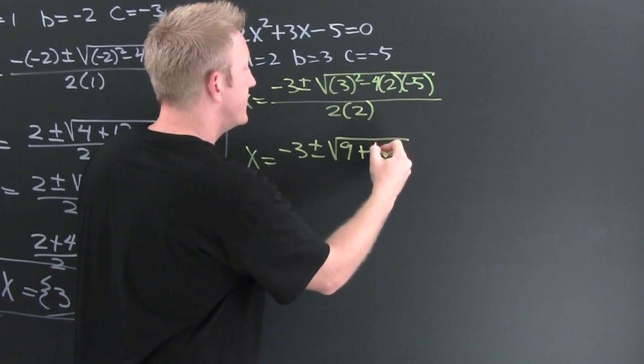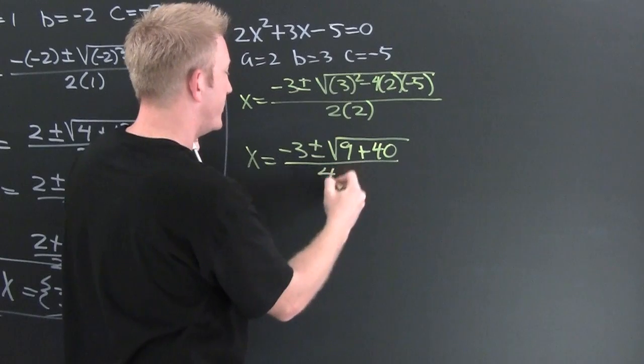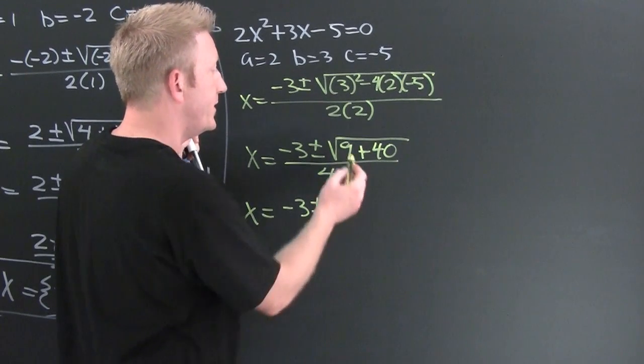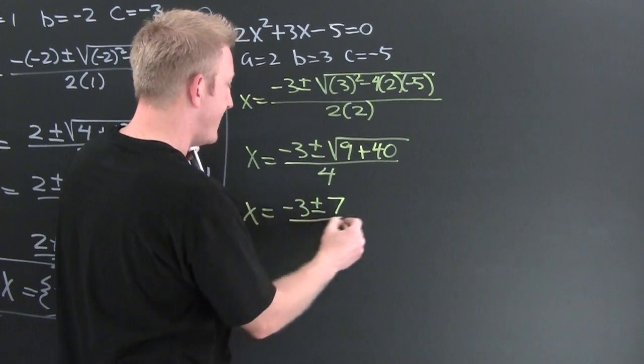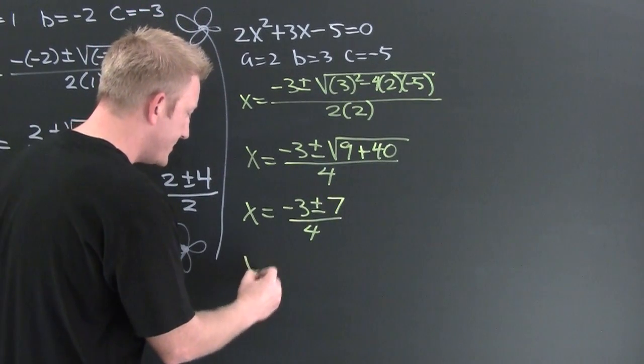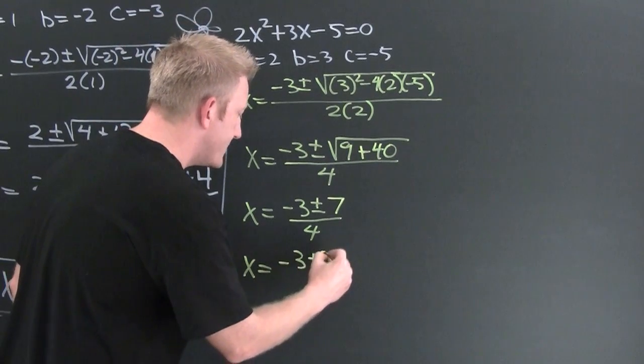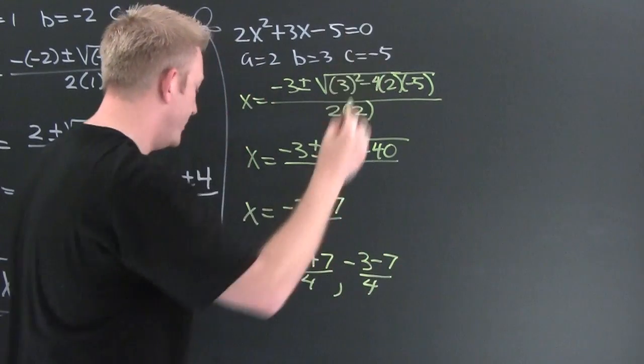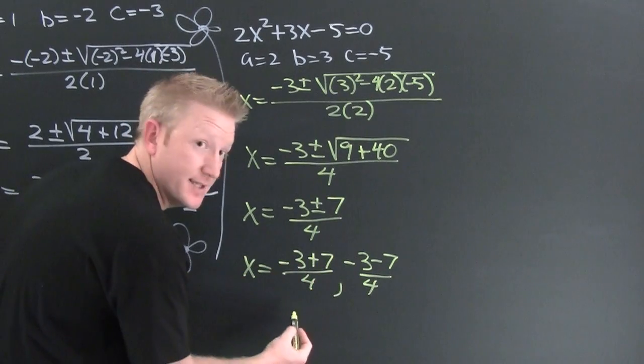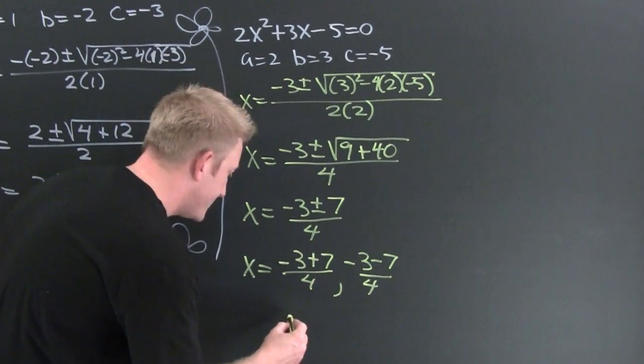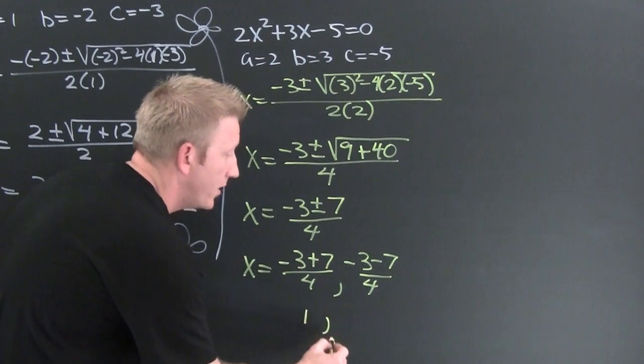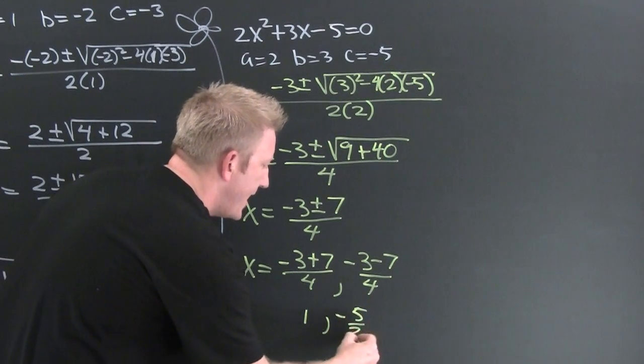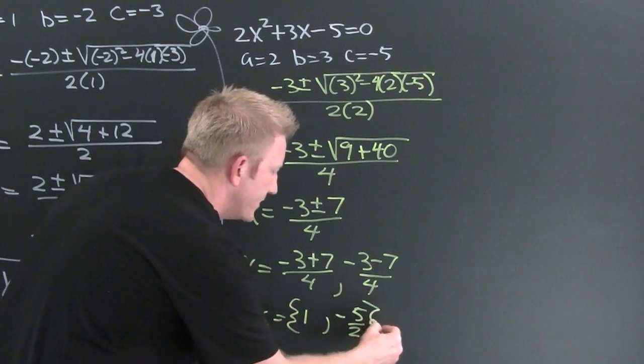Finish him: x equals minus 3 plus and minus square root of 9 plus 40, all over 4. So here we get to see x equals minus 3 plus or minus the square root of 49, which is 7, over 4. Then it'll break up into two cases: x equals minus 3 plus 7 over 4 or minus 3 minus 7 over 4. That's 4 over 4 which is 1, and that's minus 10 over 4 which is minus 5 halves. Our answers can be fractions.